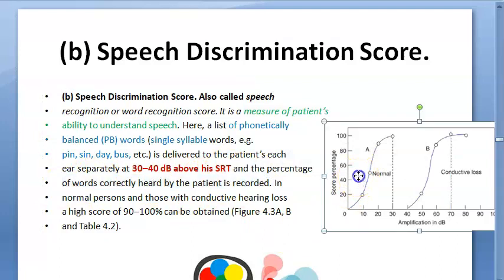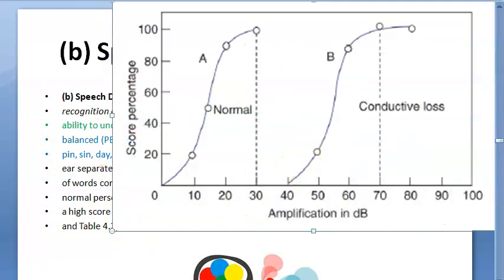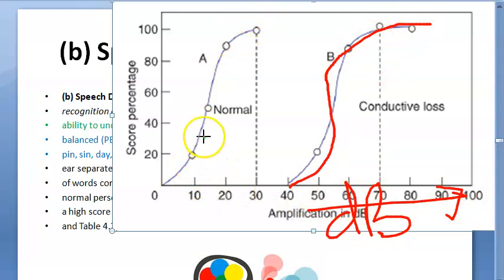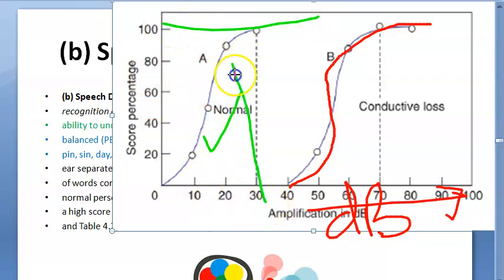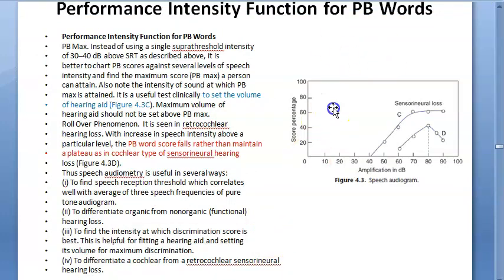Looking at this graph, the x-axis is decibels. People with conductive loss need more decibels, while normal people do not need as many. At 30 decibels, normal individuals can hear 100 percent of words correctly.